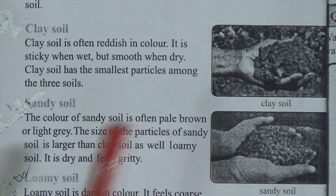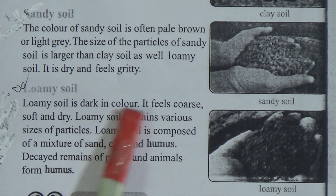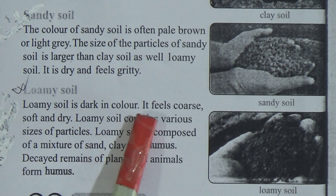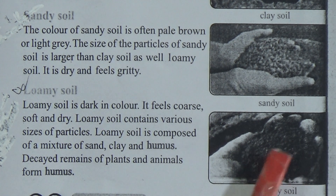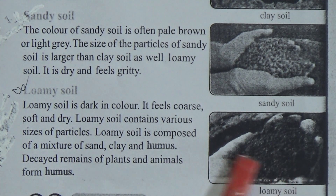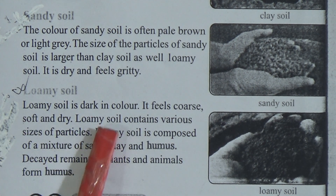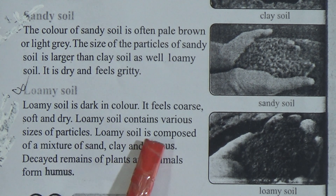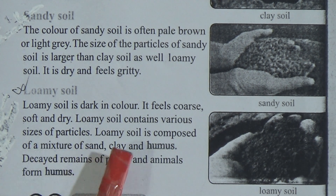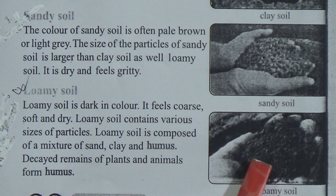Now, loamy soil. Loamy soil is dark in color — underline this line. See this figure of loamy soil. Loamy soil is dark in color, it feels coarse, soft, and dry. Loamy soil contains various sizes of particles. Loamy soil is composed of a mixture of sand, clay, and humus. Decayed remains of plants and animals form humus.